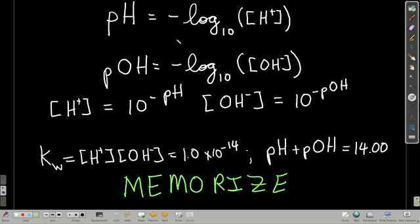Now, pH. This right here is how you calculate the pH of the solution. Just take the negative log base 10 of the concentration of hydrogen ion. We have a similar property called pOH. It's calculated by taking the negative log base 10 of the concentration of hydroxide ion.